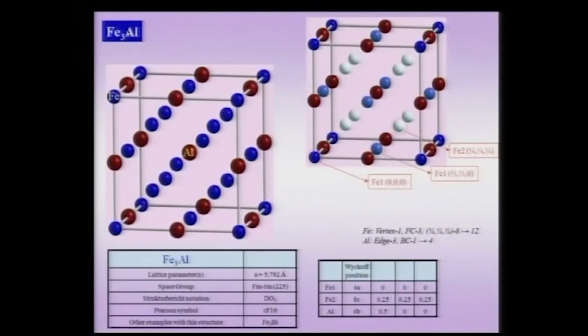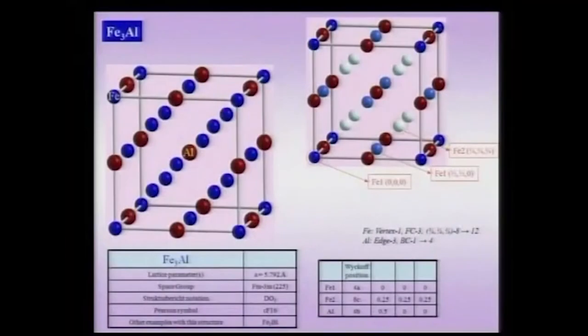The next example of an ordered structure we consider is Fe3Al. As we are going from simple ordered structures to more complex ordered structures, we will have to use certain techniques to understand and visualize them, and we will also come across certain concepts which we have not considered before. These examples are not just examples of ordered structures, but they additionally serve to highlight certain aspects regarding, for instance, the coordination of atoms, which we have not dealt with before.